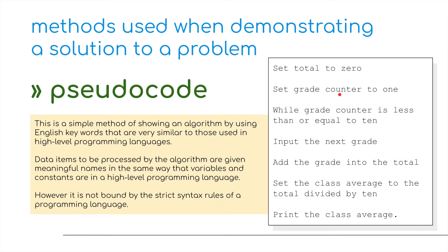So here's an example of some pseudocode whereby we're going to set a variable called total to zero, we're then going to set a grade counter to one and while the grade counter is less than or equal to ten we're going to be able to input a new grade or the next grade. We're going to add the grade into the total and then we're going to set the class average, so this is for a class of students, we're going to set the class average to the total divided by ten. Obviously there's ten students in the class and then we're going to print the class average. So this is basically some pseudocode that will allow us to calculate the average grade for ten students in a class. Nice and simple, basically just written almost in standard English as a list of items.